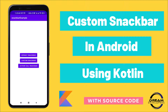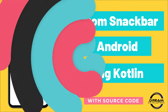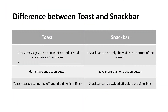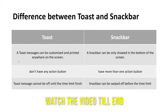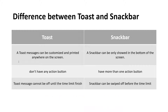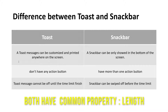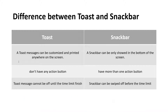Let's check out the difference between Toast message and Snackbar. Toast message can be positioned anywhere on the screen, whereas Snackbar can only be shown at the bottom of the screen. Toast message cannot have any action button, whereas Snackbar can have an action button. Also, Toast message cannot be dismissed early, whereas Snackbar can be swiped off before the time limit. Now let's move to Android Studio and create a Snackbar.